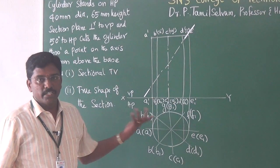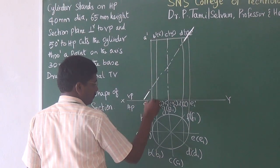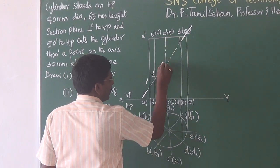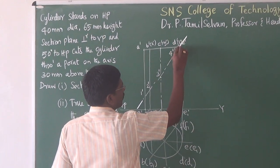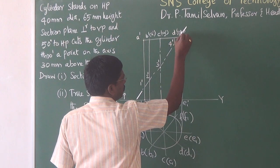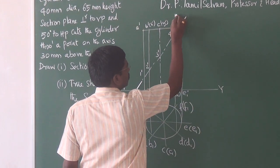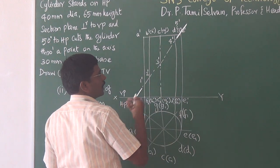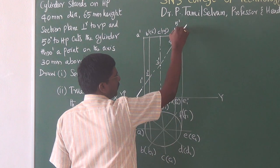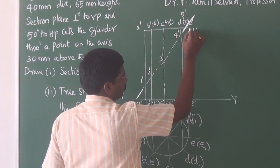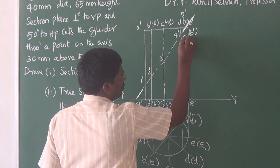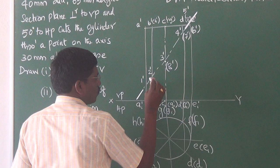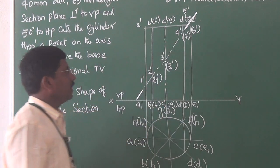Now I have to mark the cutting points as in the previous problem. The first cutting point is on visible edge AA1 — this is 1 dash. BB1 is 2 dash, CC1 is 3 dash, DD1 is 4 dash, and then on the top face DE is 5 dash (visible). Next the invisible cutting points: EF is 6 dash, FF1 is 7 dash, GG1 is 8 dash, HH1 is 9 dash. Totally 9 cutting points.